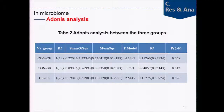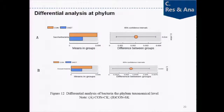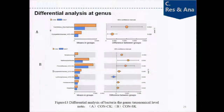ADONIS analysis showed a significant difference between CON and SK. At the phylum level differential analysis, Saccharibacteria in SK and Euryarchaeota in SK significantly decreased compared to those of CON. At the genus level, two genera showed significant difference between CON and SK.